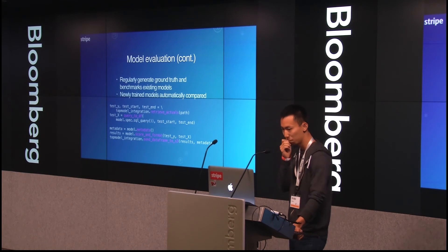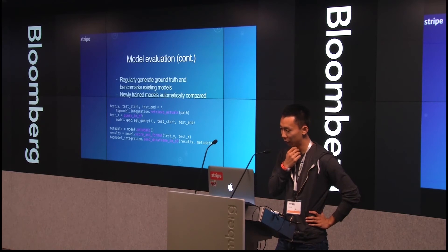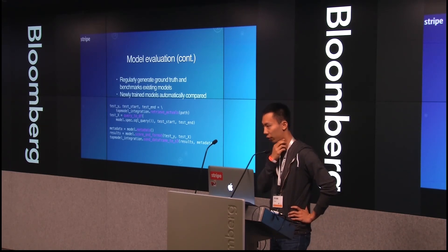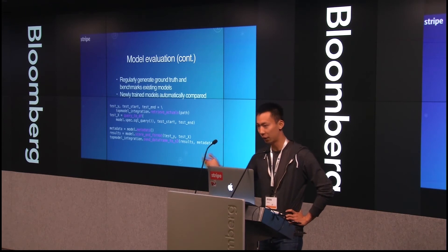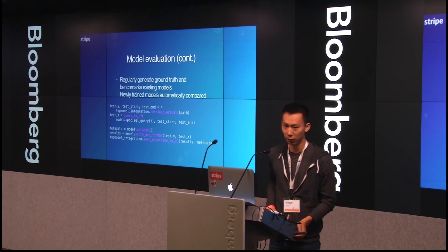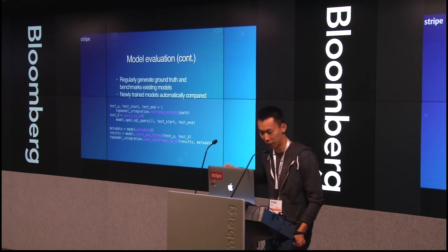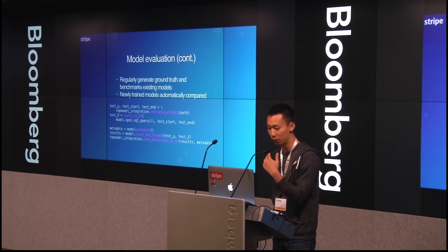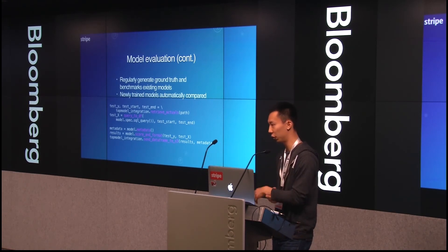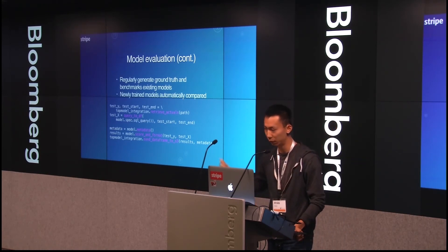Here's what our model benchmarking script looks like. Every single month we would generate new benchmarks and benchmark all our old models that we've already trained. Every time you train a new model, you ask how it compares. The code is pulling down the outcomes or test set from Top Model, turning the model into a SQL query — because we already have all our features loaded into Redshift — and then scoring the test set and sending it back to Top Model.